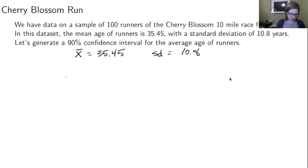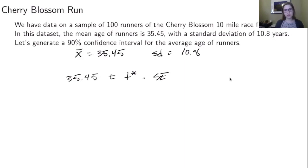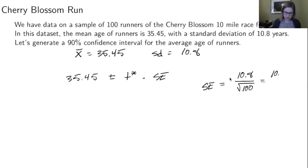We've got our point estimate, that's 35.45. We're going to have our plus or minus t* times the standard error. There are two tricky things: we have to compute our standard error and we have to find our t* value. The standard error is the standard deviation of 10.8 divided by the square root of n. With a sample of 100 runners, that's 10.8 over 10, which is 1.08.